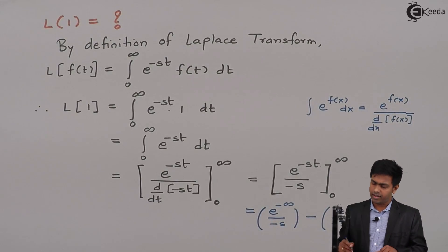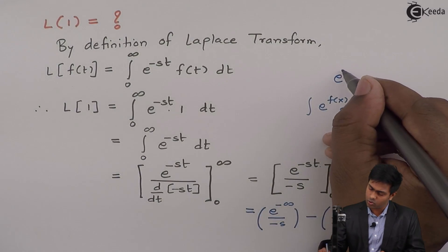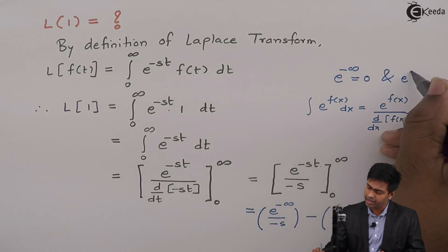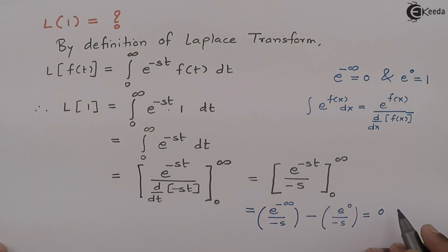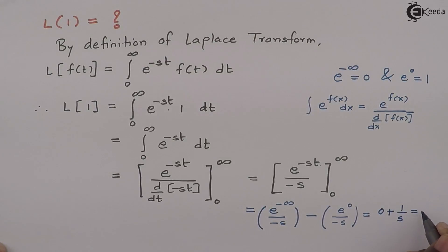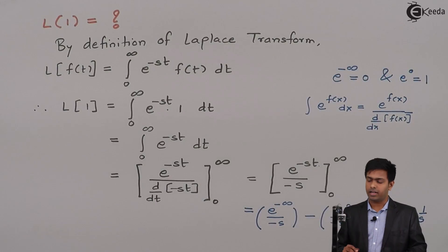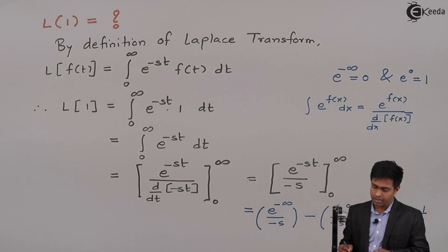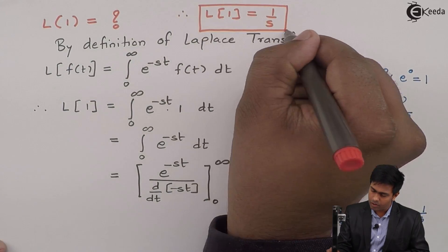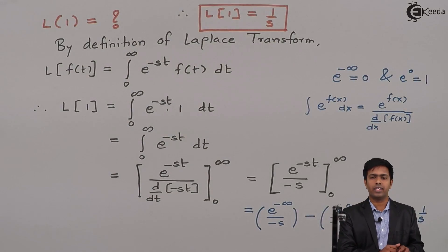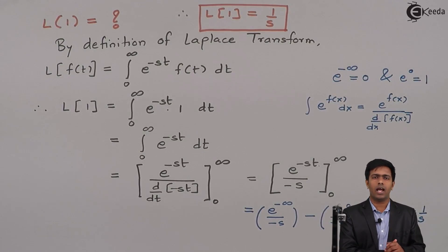Evaluating using the formulas: e raised to minus infinity equals 0, and e raised to 0 equals 1. So the first term becomes 0, and the minus minus becomes plus, with e raised to 0 equal to 1, giving us 1 upon s. Hence, the Laplace transform of 1 is equal to 1/s. This is the value of the Laplace transform of 1 that we derived from the definition of Laplace transform. Thank you.